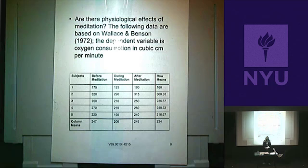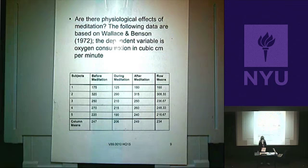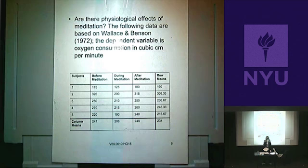Let's do another example. This is about meditation — are there physiological effects of meditation? The data are based on Wallace and Benson, a study from 1972. The dependent variable is oxygen consumption in cubic centimeters per minute. We have five people who took part in a before-after design — before meditation, during meditation, and after meditation. The question is: does oxygen consumption change over the times it's being measured?